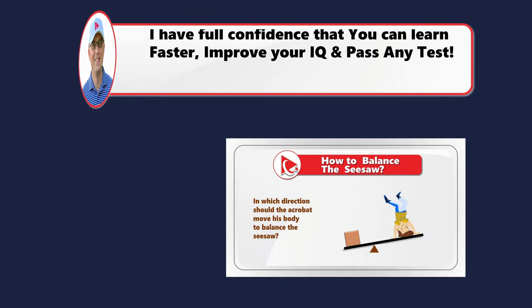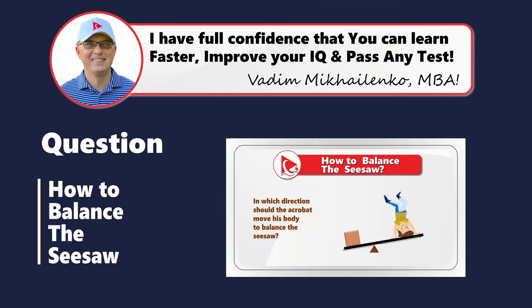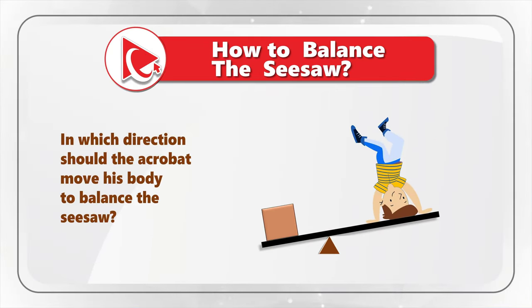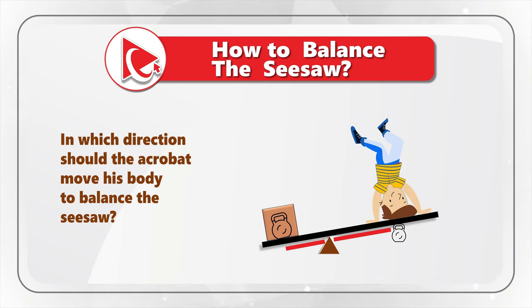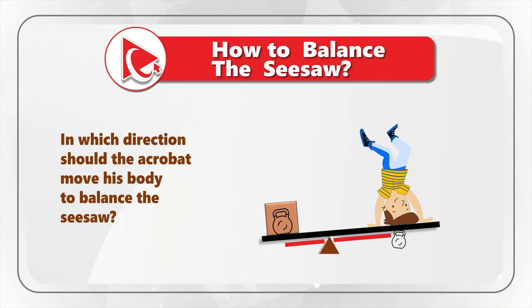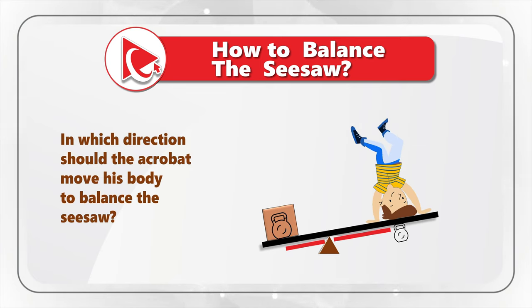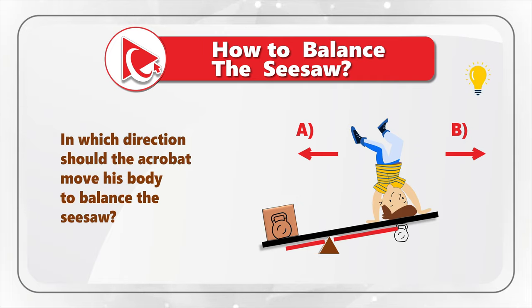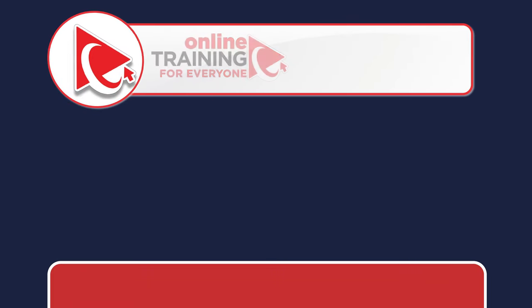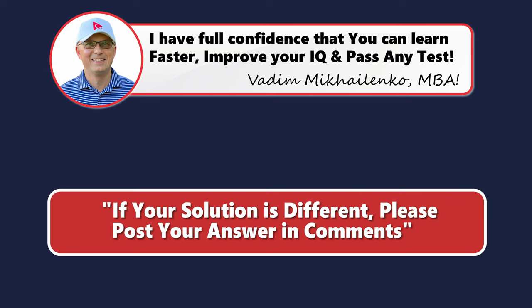Now I have a question for you to practice your skills. You are presented with a seesaw. On the left side there is a weight, and on the right side there is an acrobat. You need to determine in which direction the acrobat should move his body to balance the seesaw. You have two choices: Choice A — to the left, or Choice B — to the right. Maybe pause the video to find your answer, then post it in comments so I can give you my feedback.